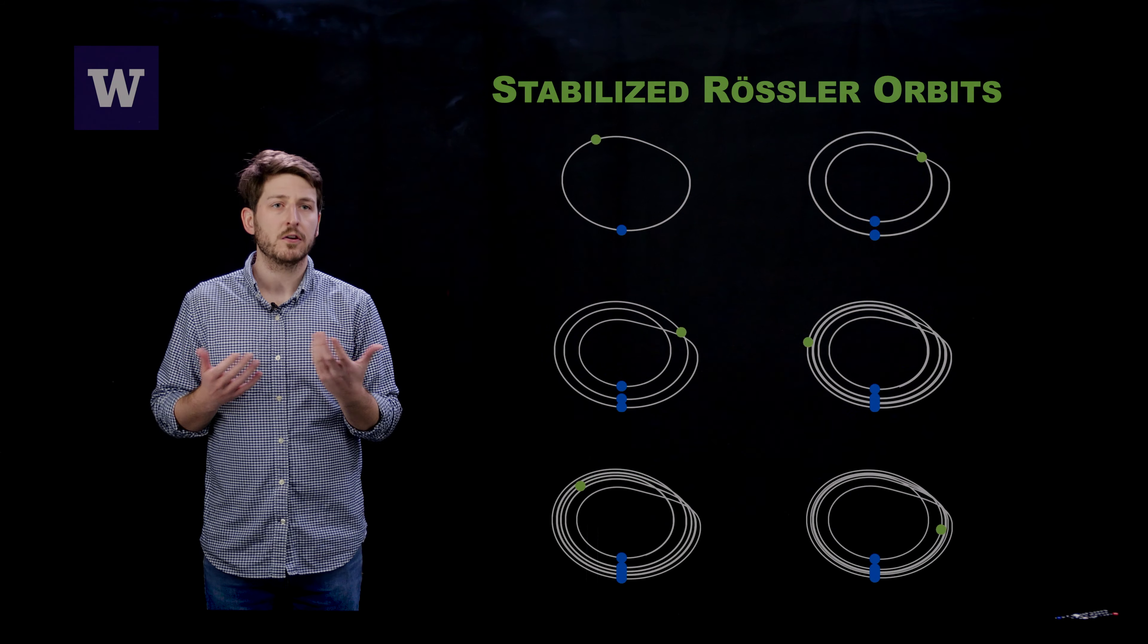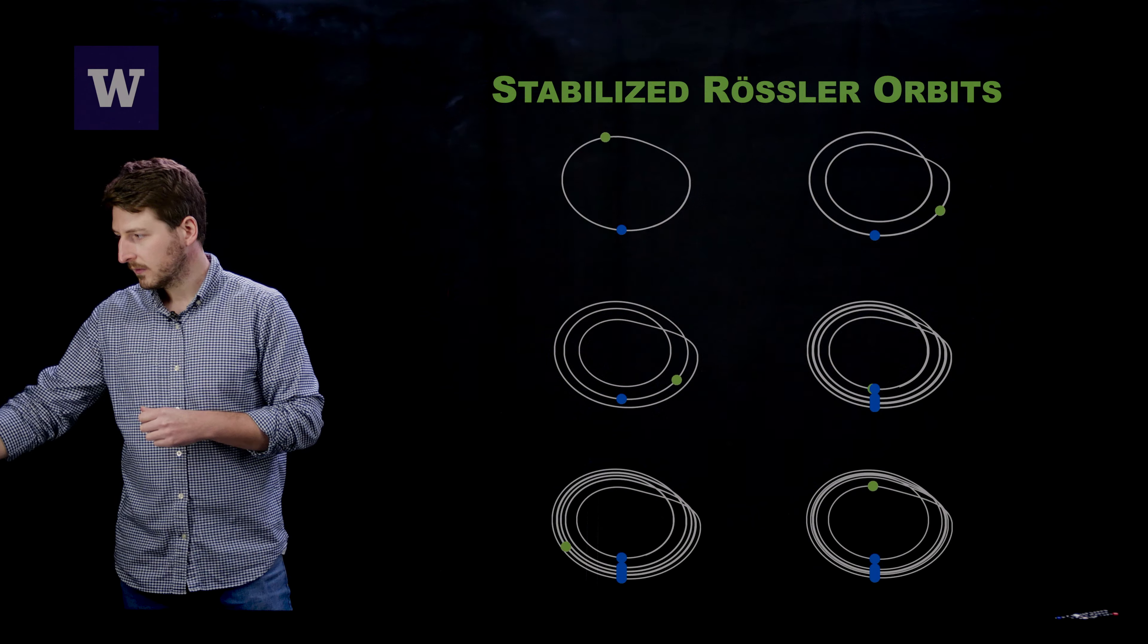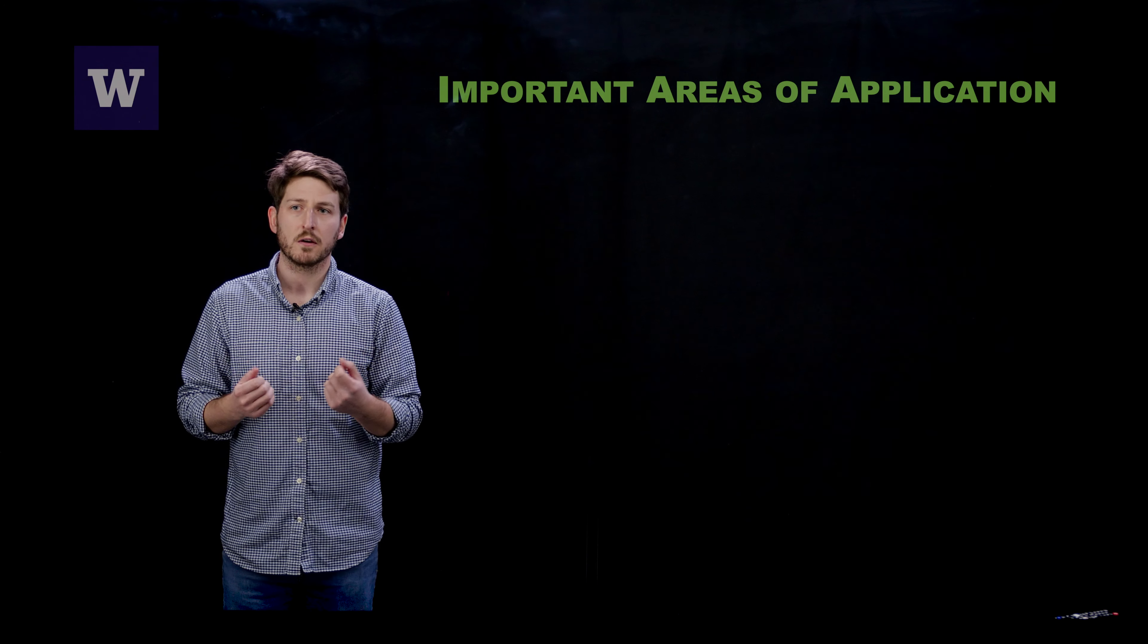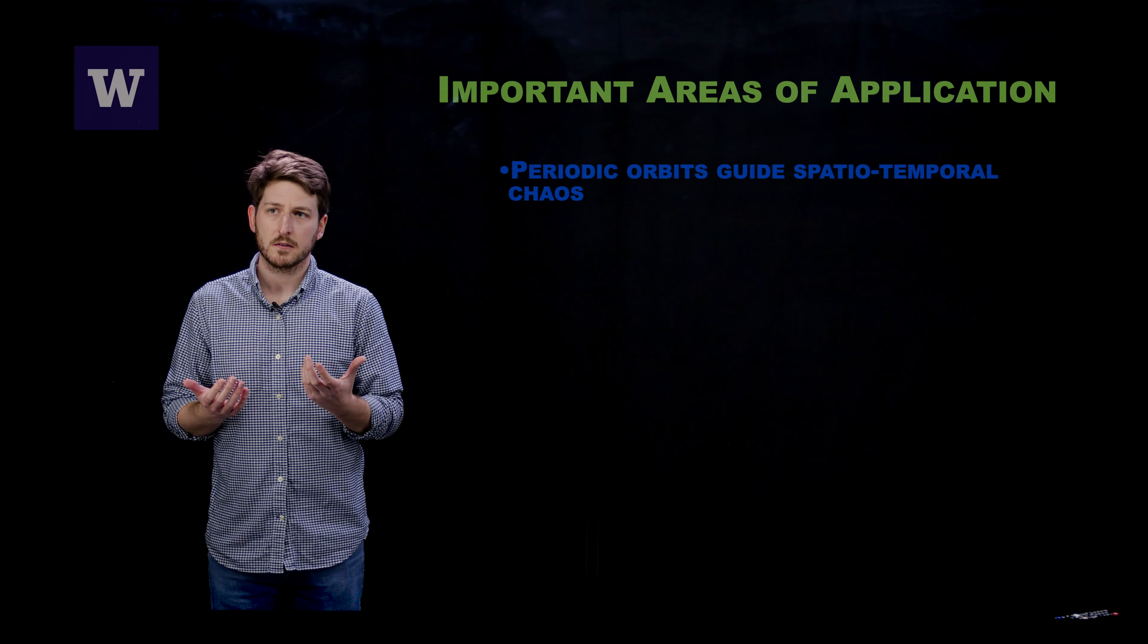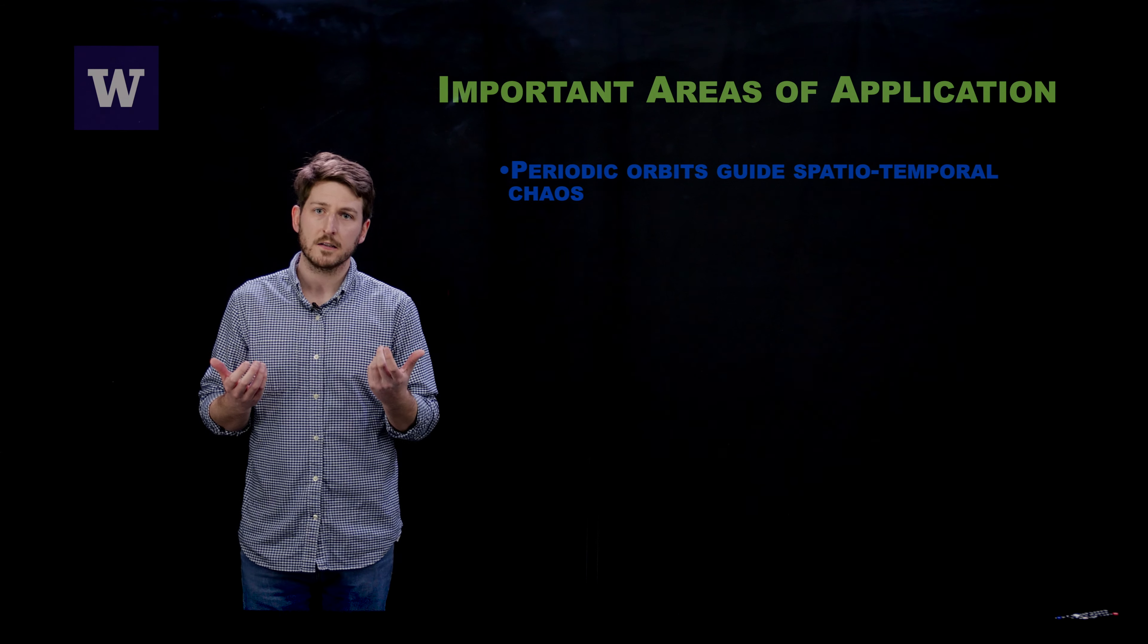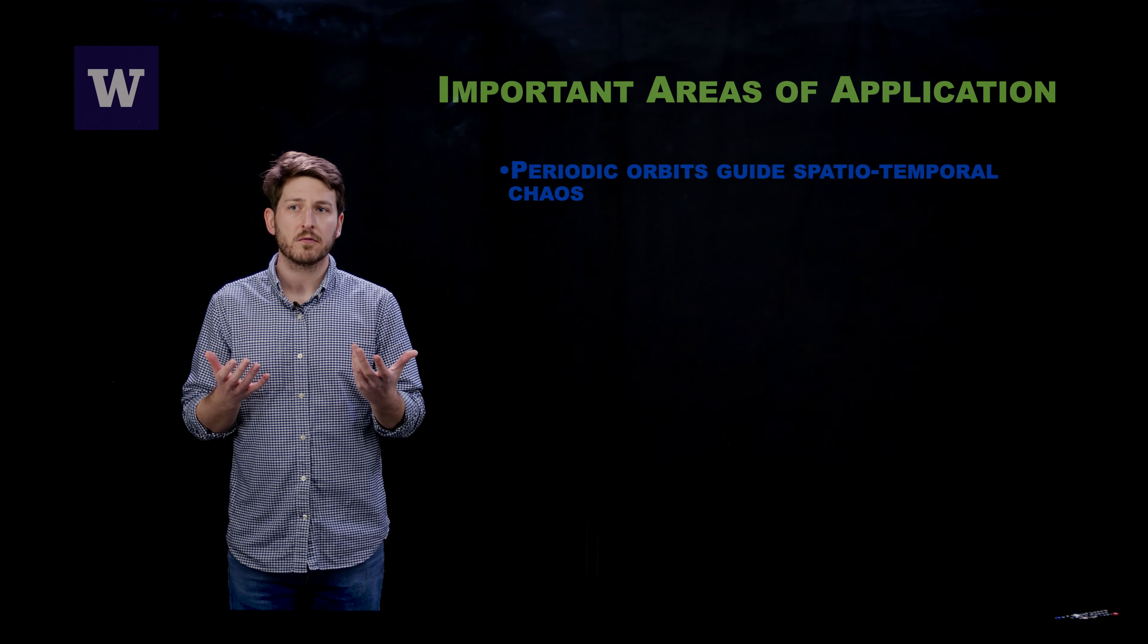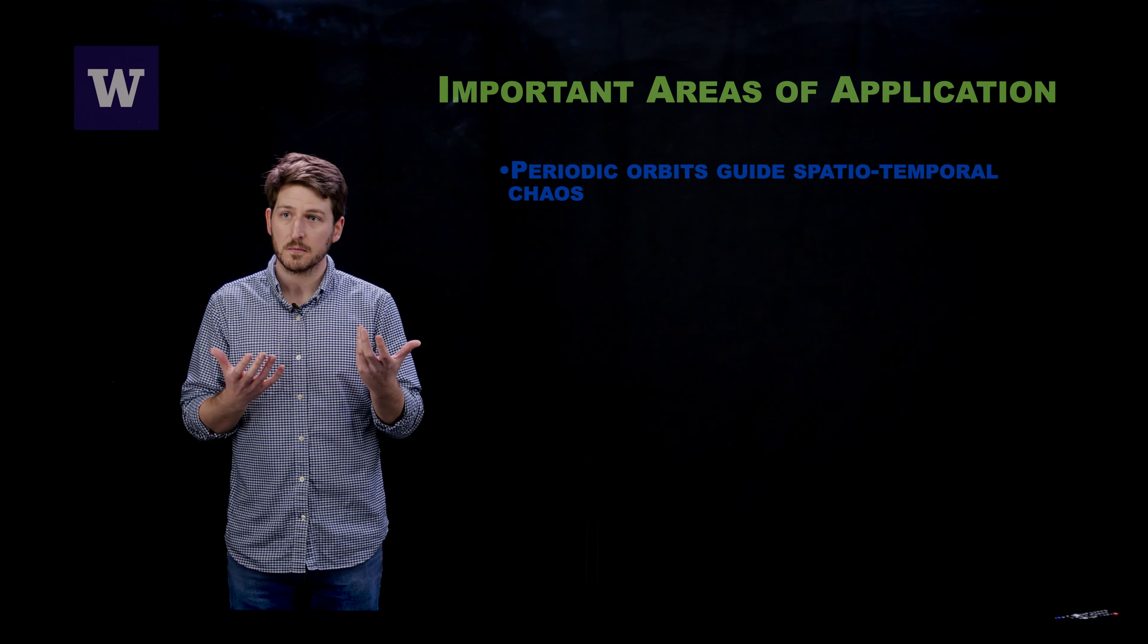Now let me conclude by just emphasizing some important areas where we can apply these methods going forward. The first of which is to spatially extended systems. Now spatiotemporal chaos that's observed in spatially extended systems is similarly guided by unstable periodic orbits, and therefore these methods hold great promise for us to understand the nature of attractors in spatially extended systems and potentially control the output, particularly this is useful for places like turbulent fluid flows.